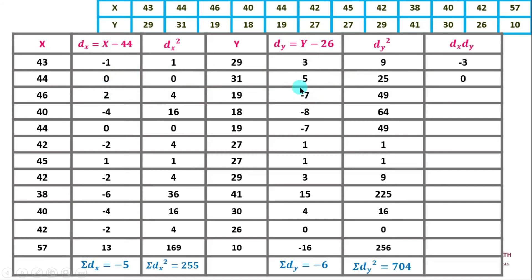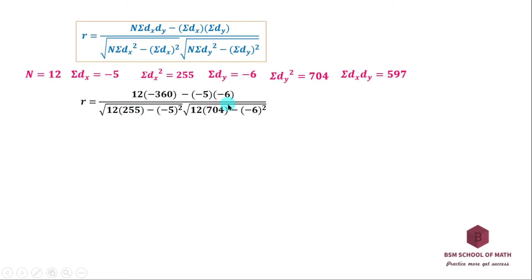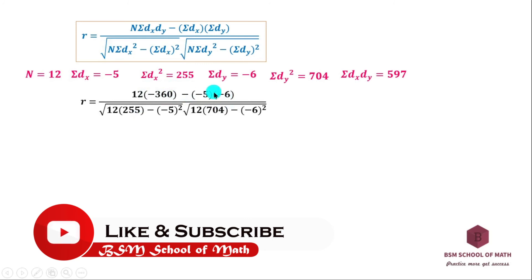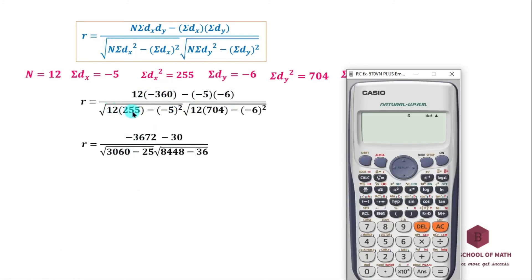2 into minus 7 is minus 14. This is the answer. Doing the summation: sigma dx, sigma dy, sigma dx·dy is 597. This is the formula with these values. Now we substitute: 12 into minus 360, then minus 5 into minus — giving a minus value.